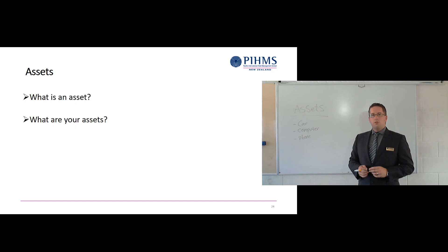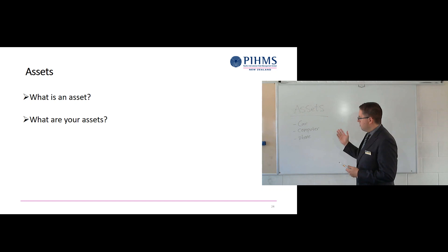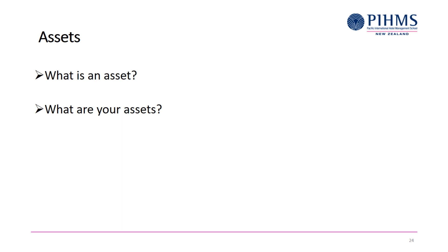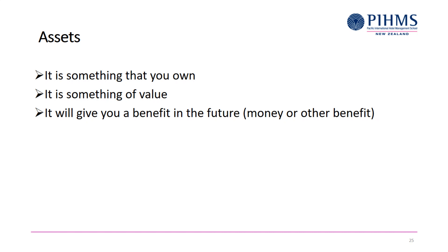Let's look at what the definition of an asset is. There are three parts needed. First, it is something that you own — something under your control, something you have, maybe under your own name, for example a vehicle. Second, it has to have some value — you can put a dollar figure on it; if you were to sell it or transfer it, someone would give you cash. Finally, it's going to give you a benefit in the future.